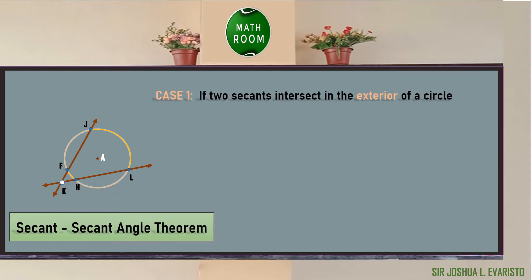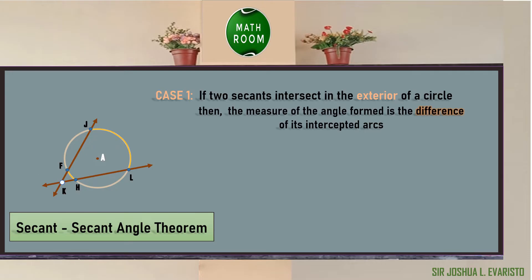Case one: if two secants intersect in the exterior of a circle, the point of intersection is outside the circle at point K. The measure of the angle formed is one-half the difference of its intercepted arcs. In circle A, the angle formed is angle JKL, and the intercepted arcs are arc JL and arc FH. So we have: angle JKL = one-half of (arc JL minus arc FH).